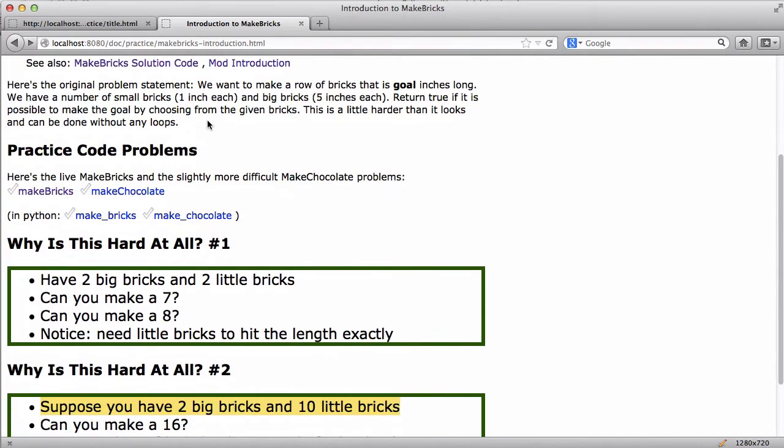So here's the problem statement. We want to make a row of bricks that is goal inches long. We have a number of small bricks, one inch each, and big bricks, five inches each. Return true if it is possible to make the goal by choosing from the given bricks. This is a little harder than it looks, it can be done without any loops.